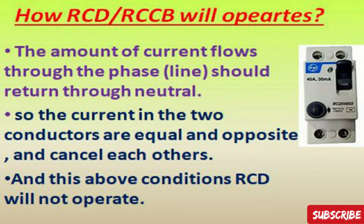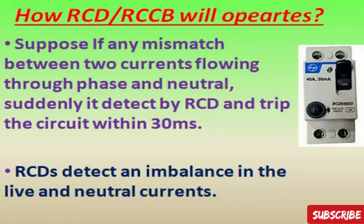How does RCD operate? In an electrical circuit, the amount of current flowing through the phase (line) should return through the neutral only. The currents in the two conductors are equal and opposite and cancel each other. The RCD will not operate under this balanced condition. However, if any mismatch between the two currents flowing through phase and neutral is detected, the RCD trips the circuit within 30 milliseconds.